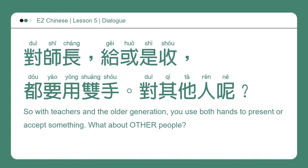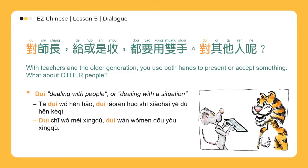对师长，给或是收，都要用双手。对其他人呢？So with teachers and the older generation, you use both hands to present or accept something. What about other people? 对 means dealing with people or dealing with a situation. 他对我很好，对老人或是小孩，也都很客气。He treats me well and is always courteous to older people and children. 对吃我没兴趣，对玩我们都有兴趣。I'm not interested in food, but we are interested in leisure activities.